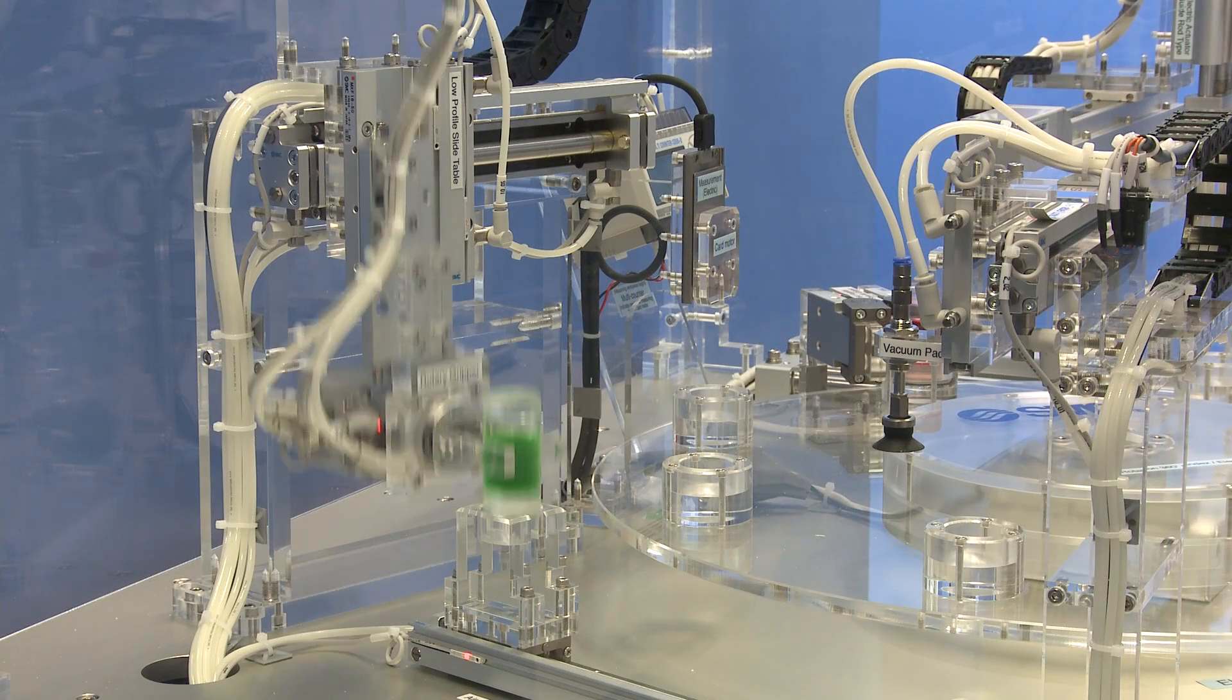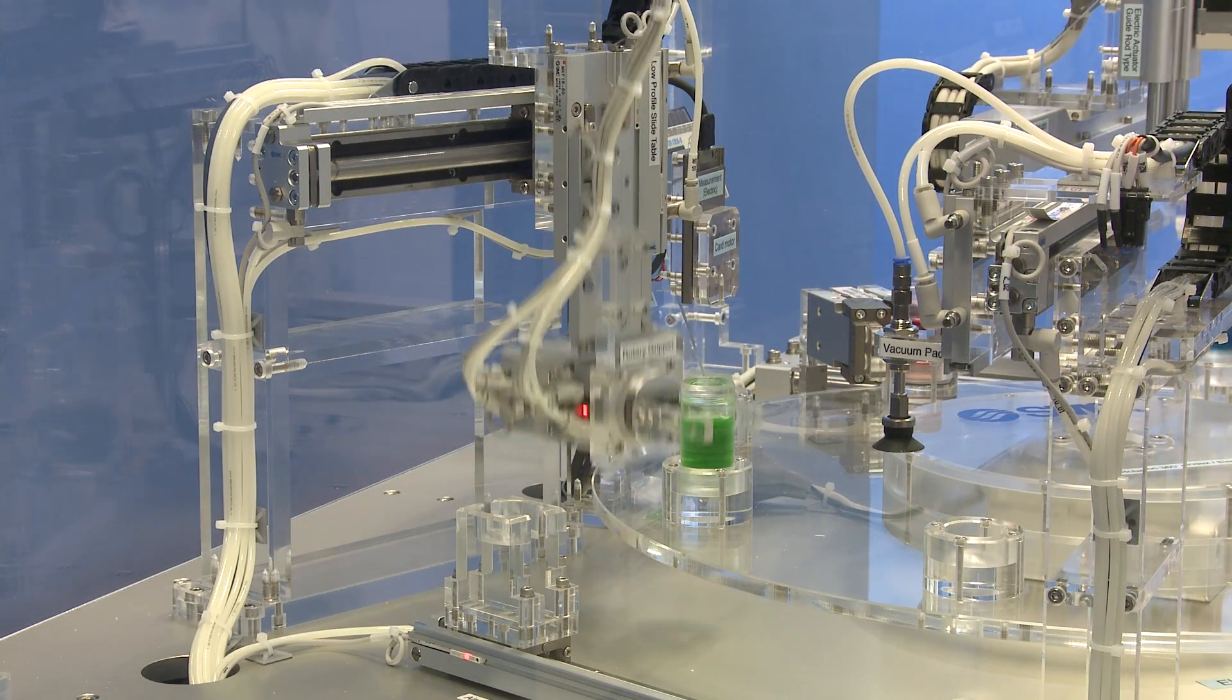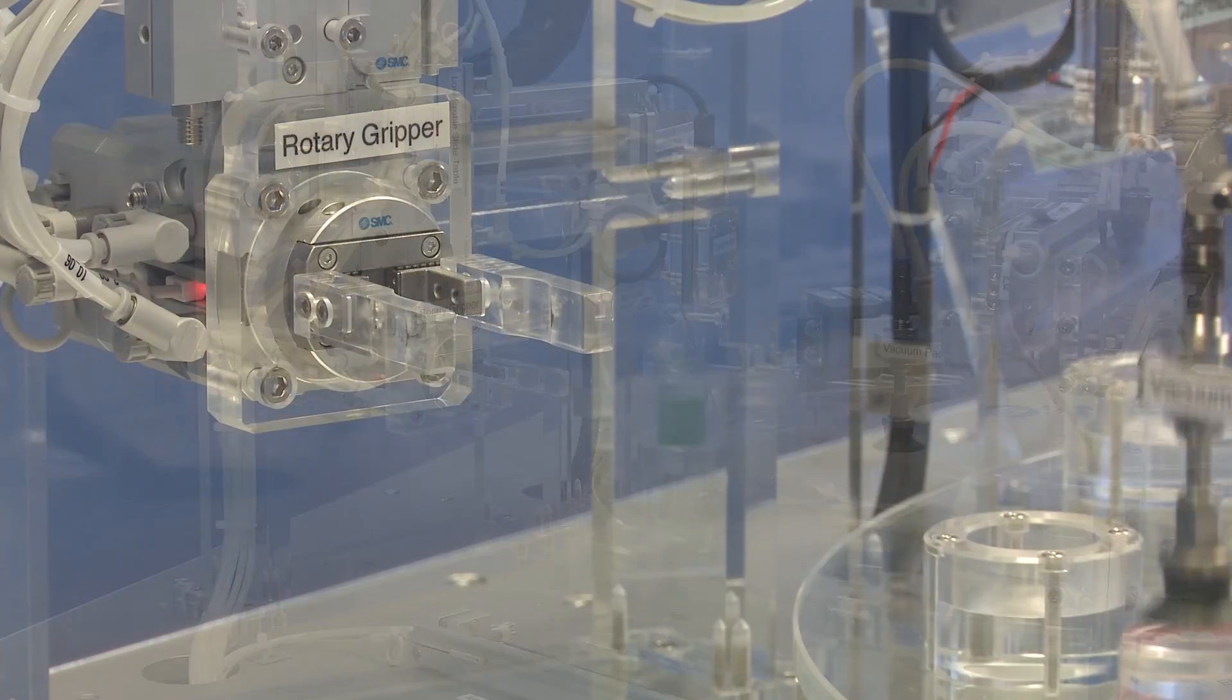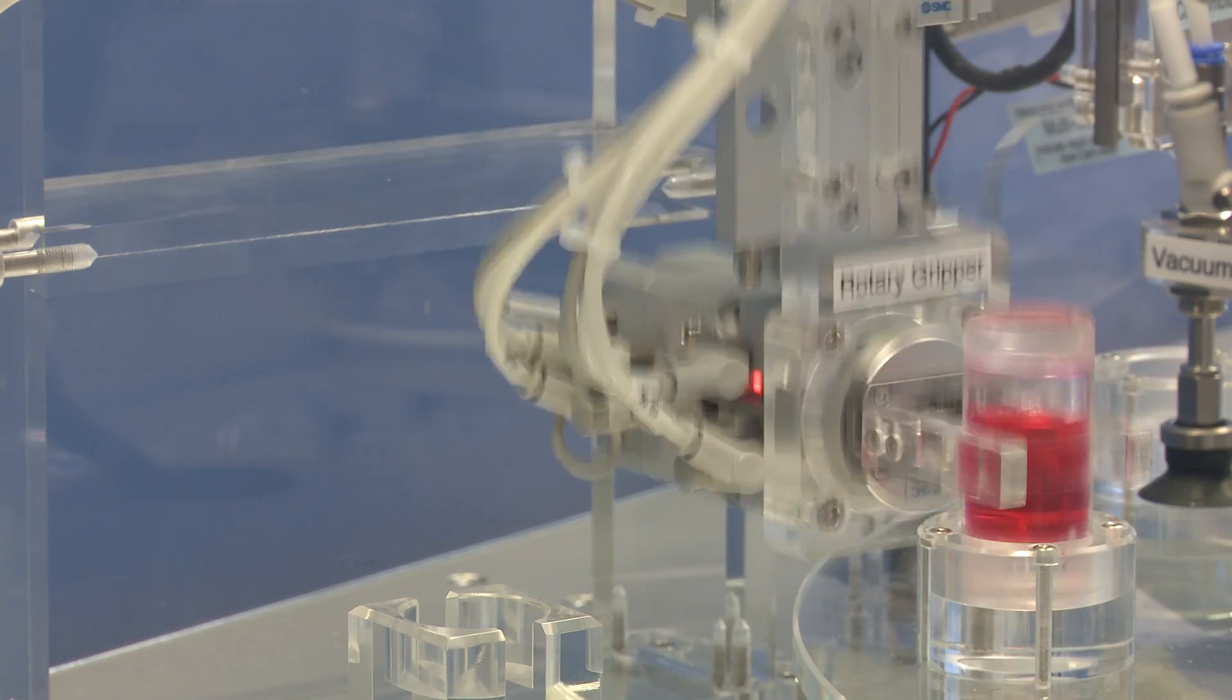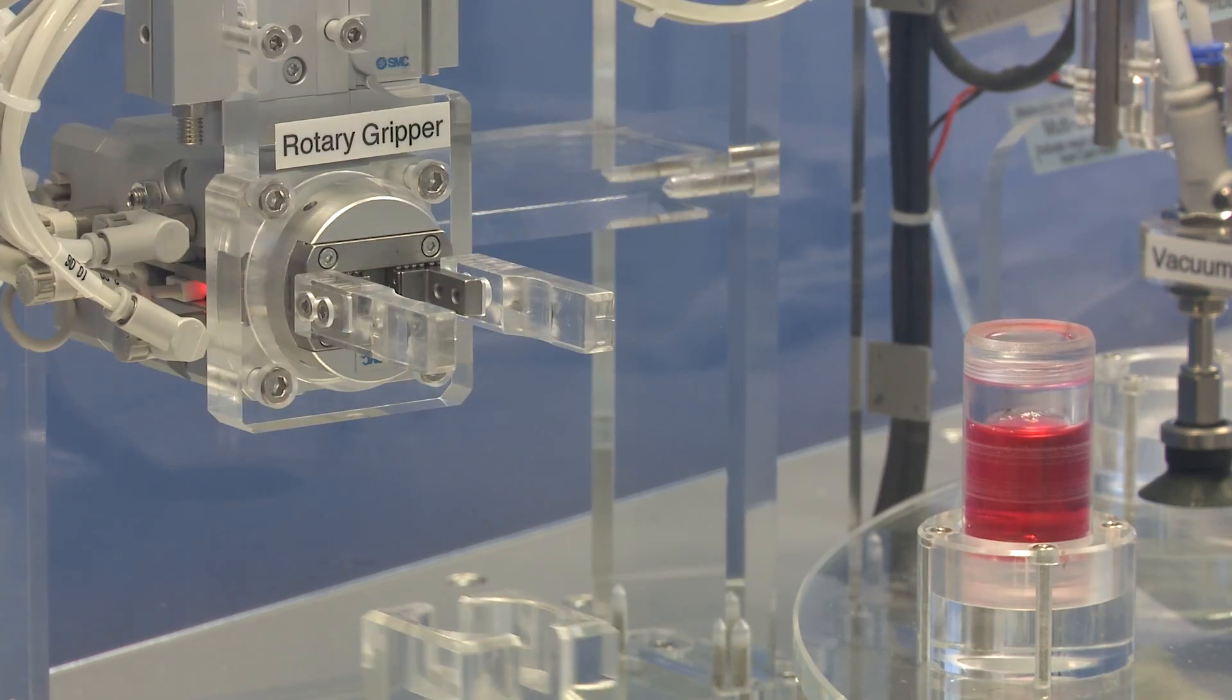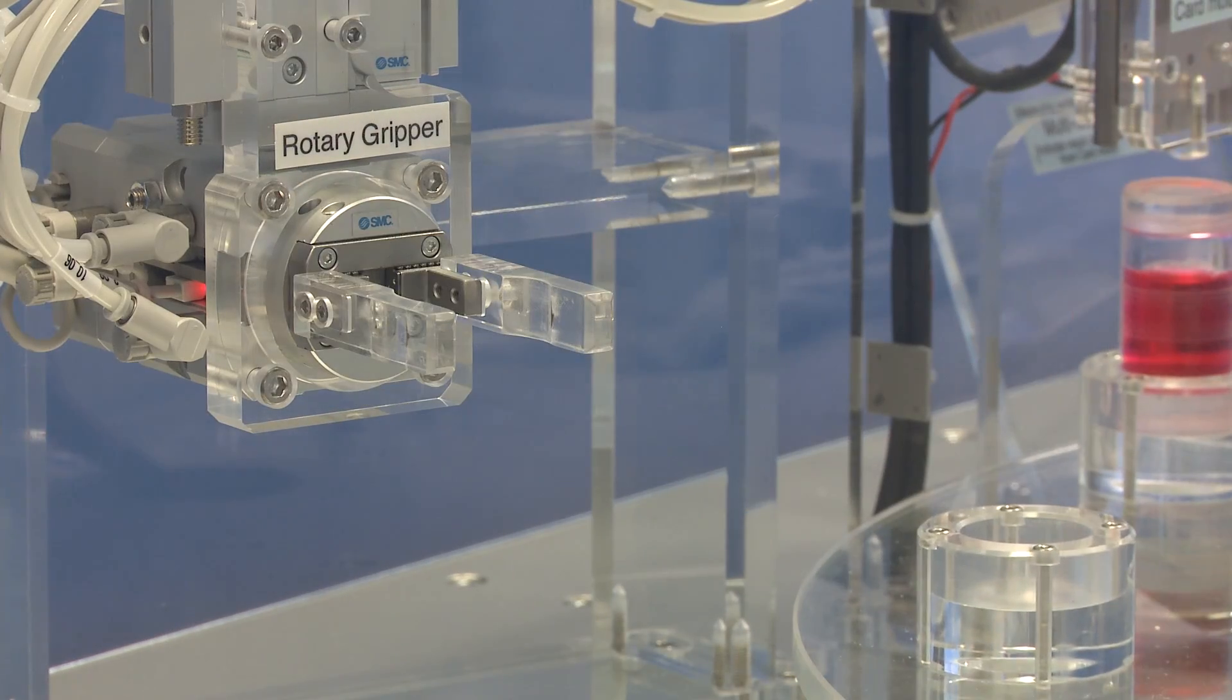Our final stage is a combination of multi-axis pneumatic tables and our combination unit, which is actually a gripper and rotary unit in one. The advantage of this is it allows you to have a compact rotary and gripper unit in a single pneumatic unit.